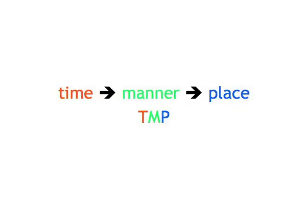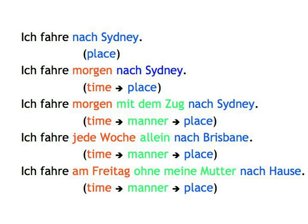On top of stating what we do, and to or for whom we do it — the accusative direct and dative indirect objects we've already learned about — we can also say when, how, and where we do something. Time, manner, place. TMP. That's the sequence that this additional information is normally given in. Ich fahre nach Sydney. Place. Ich fahre morgen nach Sydney. Time, place. Ich fahre morgen mit dem Zug nach Sydney. Time, manner, place.